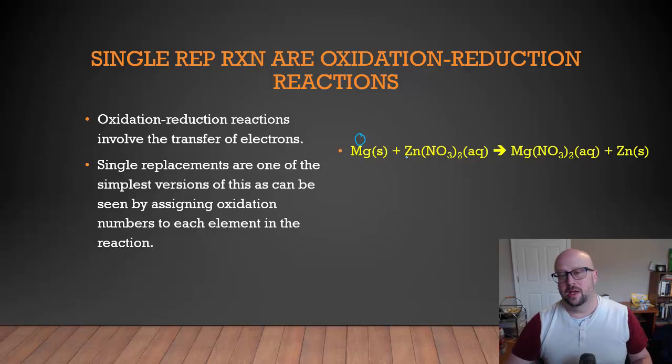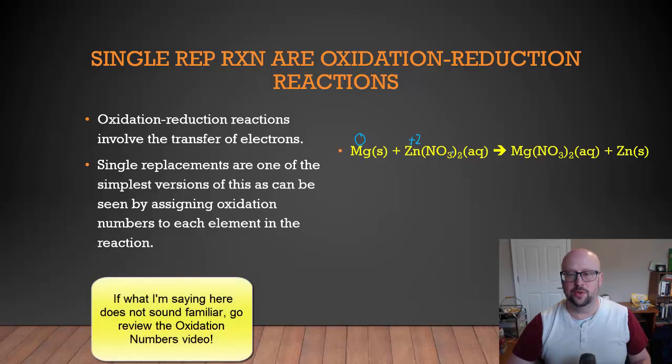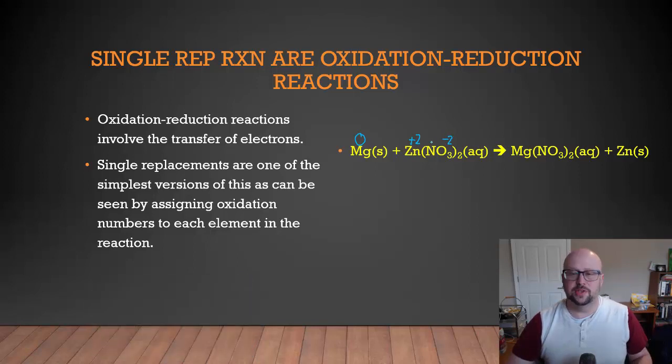Magnesium is in its solid state. Zinc is going to break apart into a monatomic ion. So its oxidation number is going to be its charge, which is plus two. We know that oxygen is negative two unless it's in a peroxide or by itself. And so in this case, that's going to make nitrogen plus five.